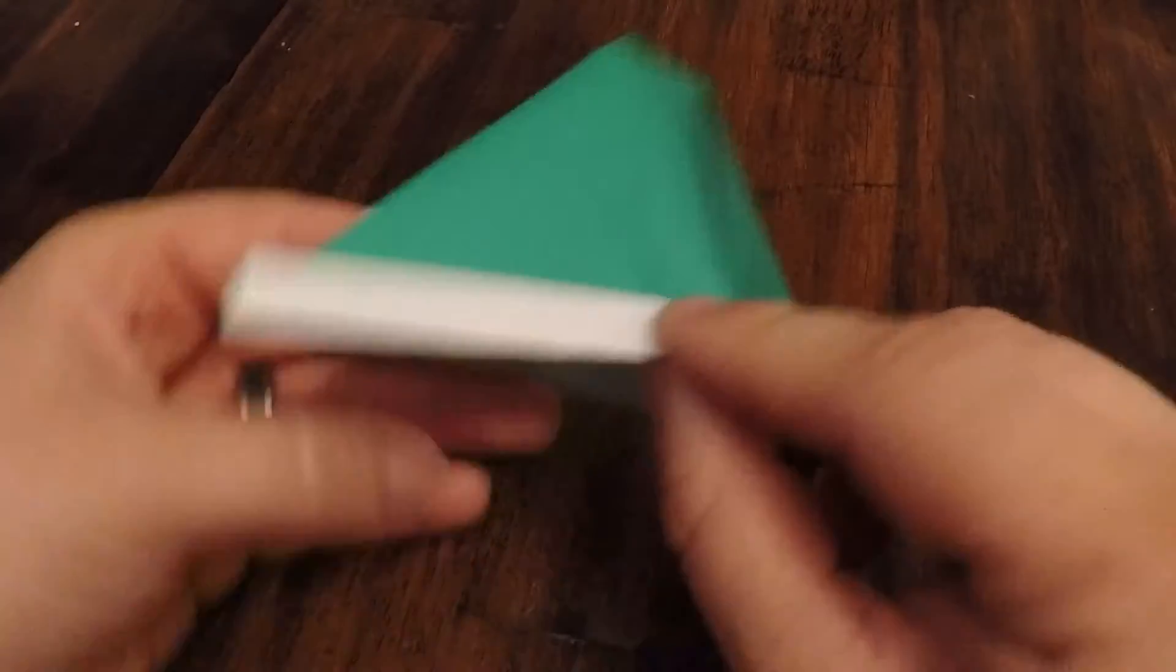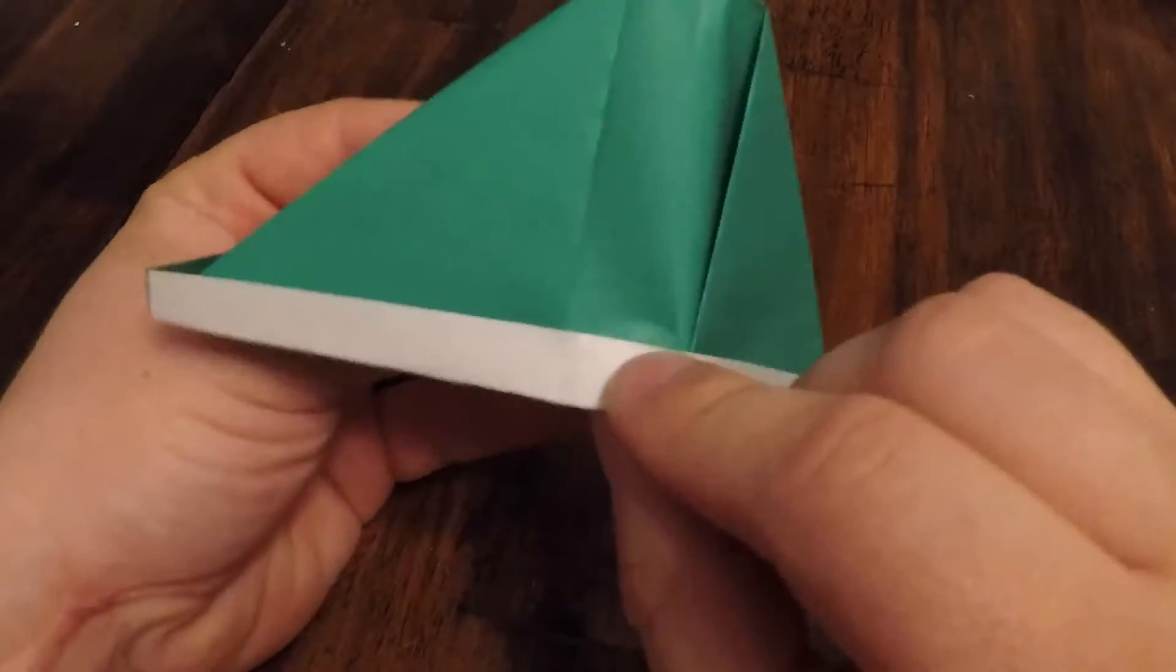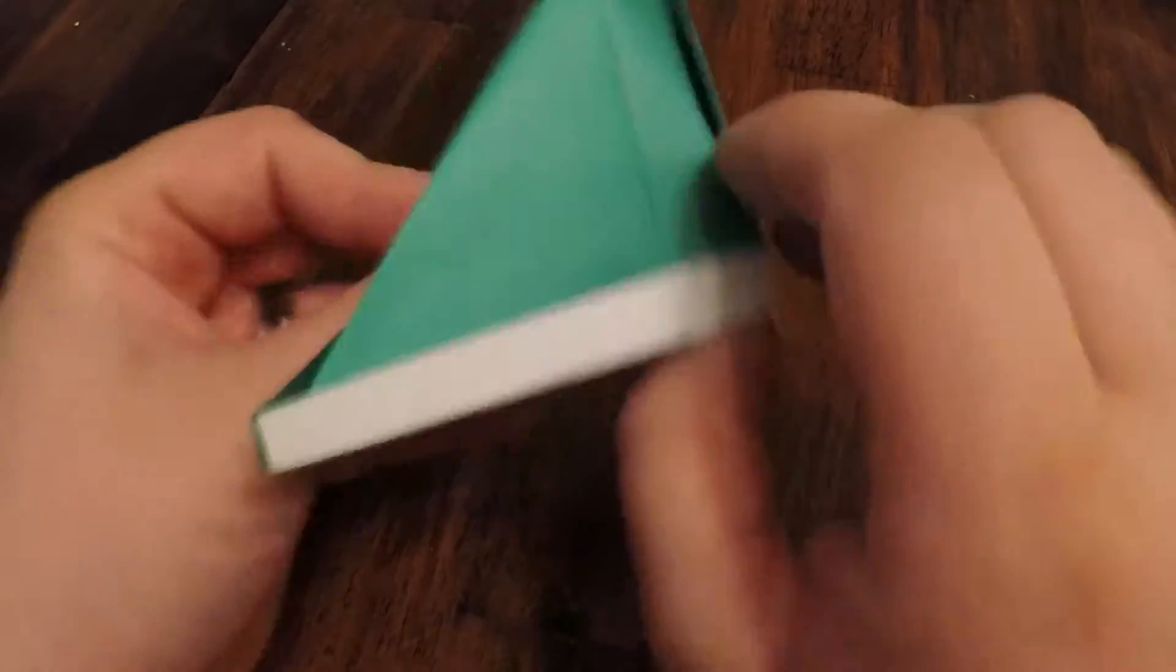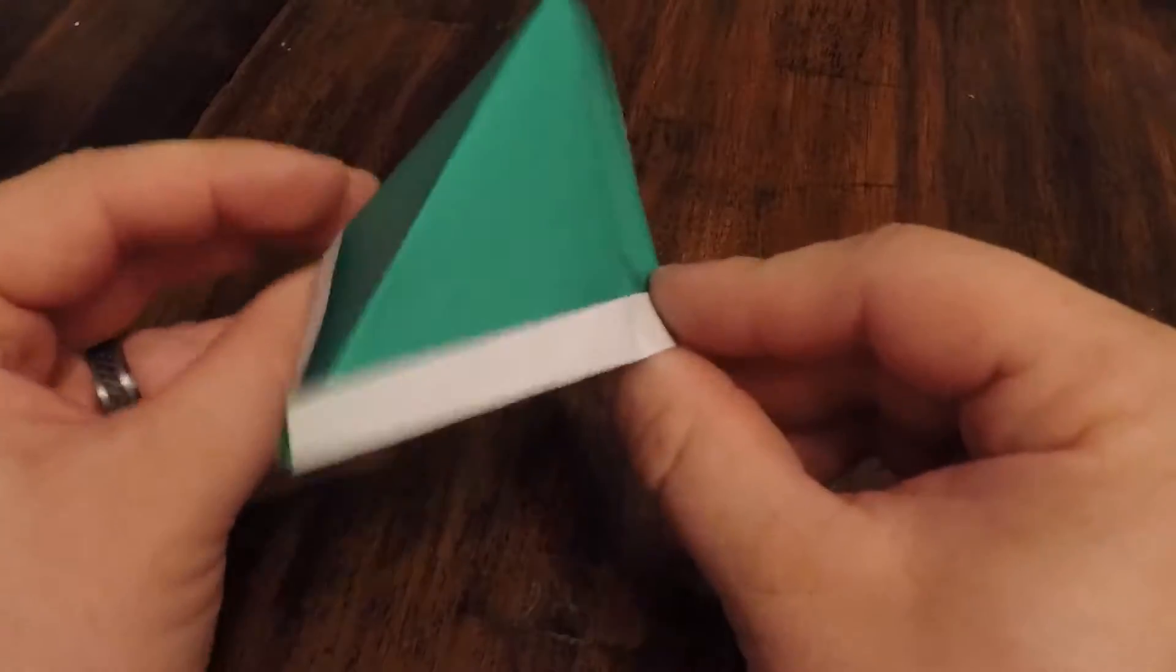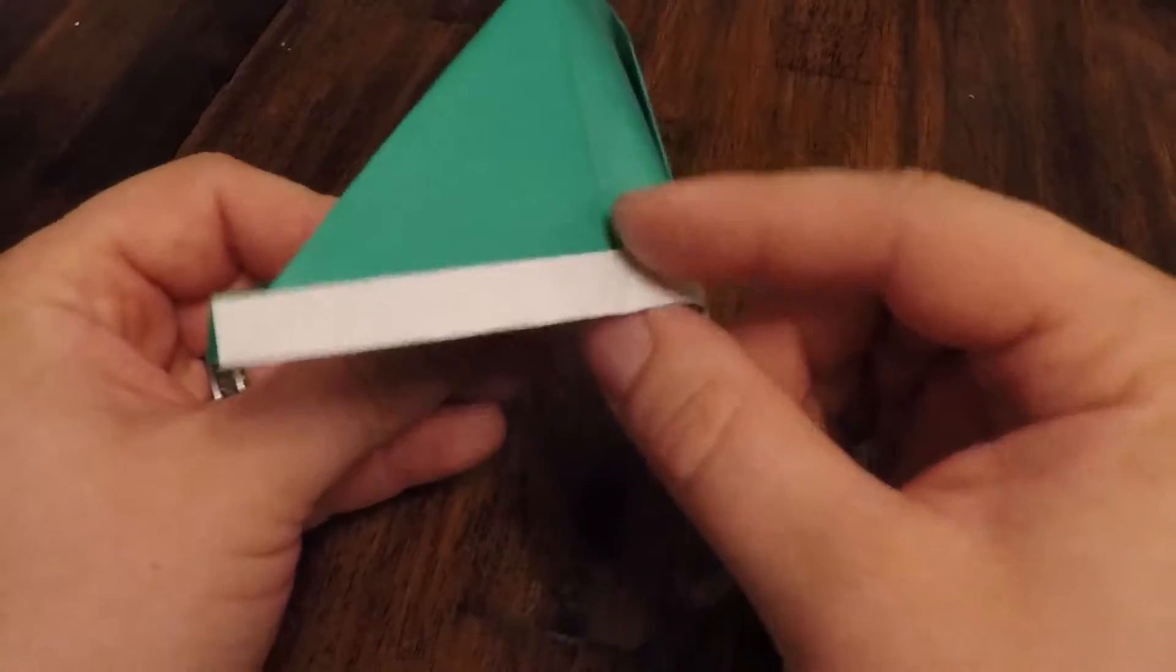And then voila, you have a little hat. If you do it this way, it could be kind of like a Napoleon hat. Or if you do it this way, it could be kind of like a Robin Hood hat. You could get a cool feather here or something like that.